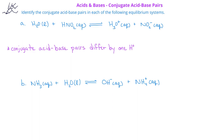Those two structures differ by one hydrogen ion, so therefore, the water and the hydronium ion are a conjugate acid-base pair. The other question is, which of these two species will be acting as the acid and which will be acting as the base? On the reactant side of the equation, we see that the water is accepting a hydrogen ion to become H3O+, so therefore, the water is initially a base and the hydronium ion would be its conjugate acid.